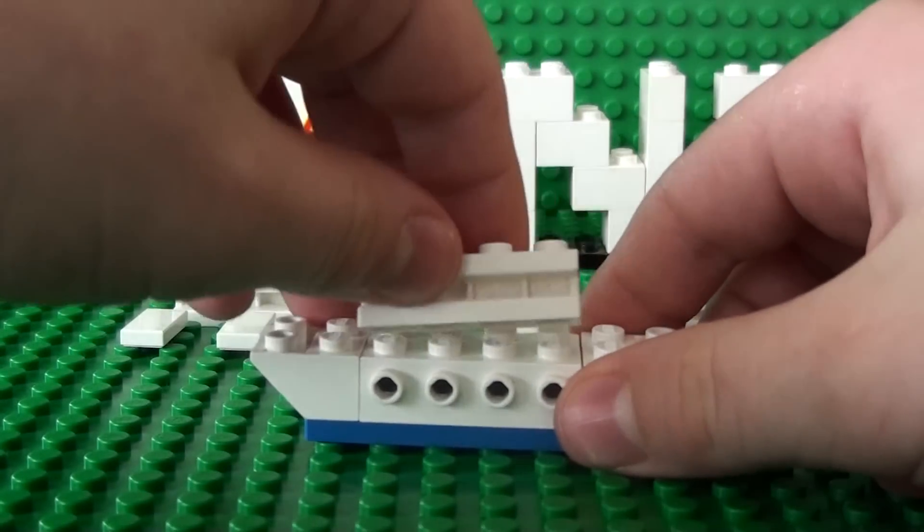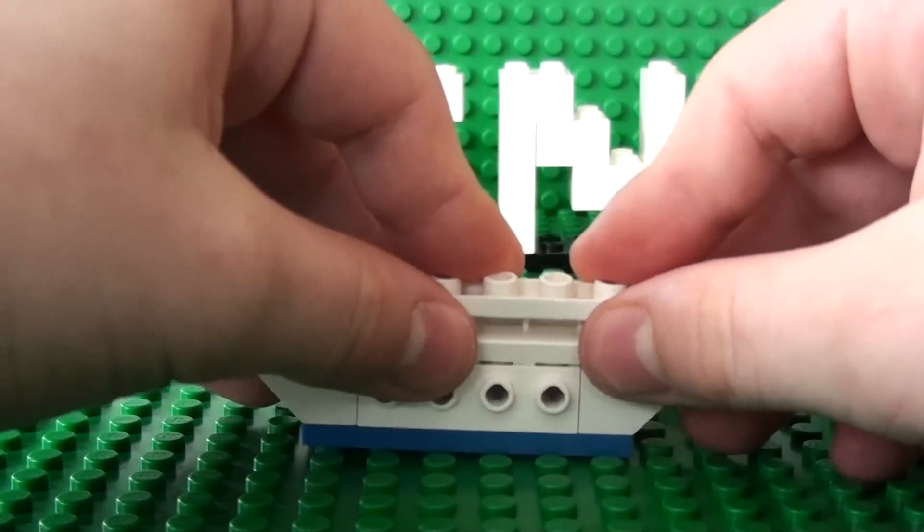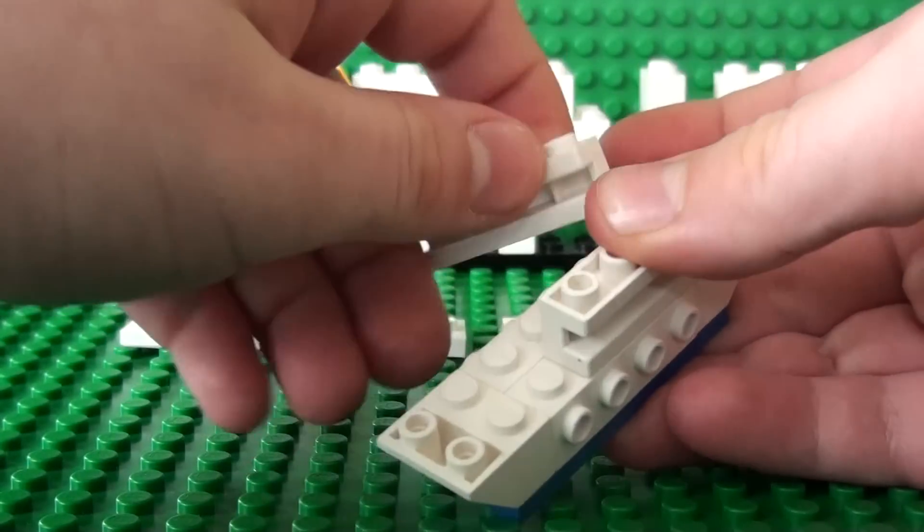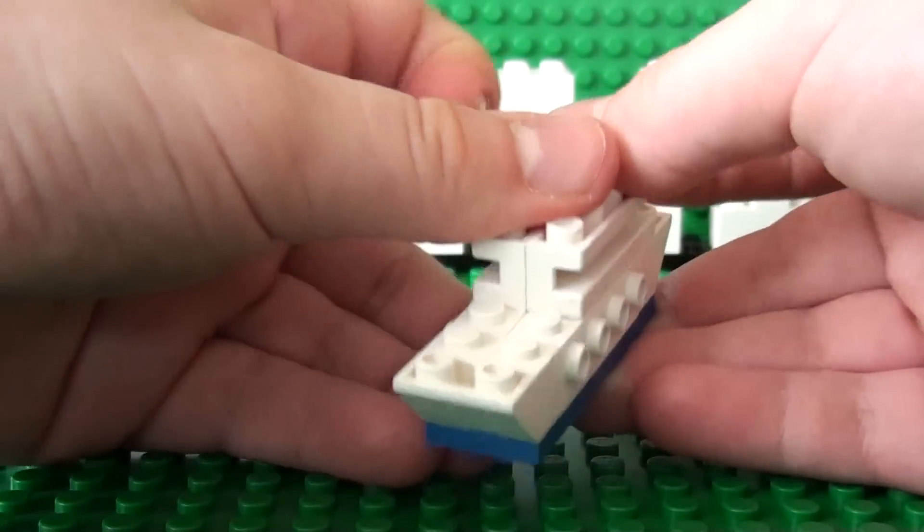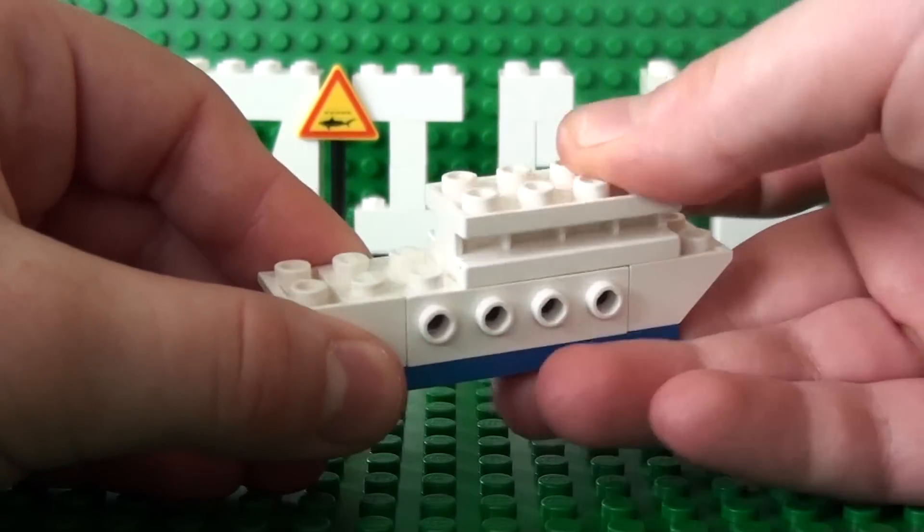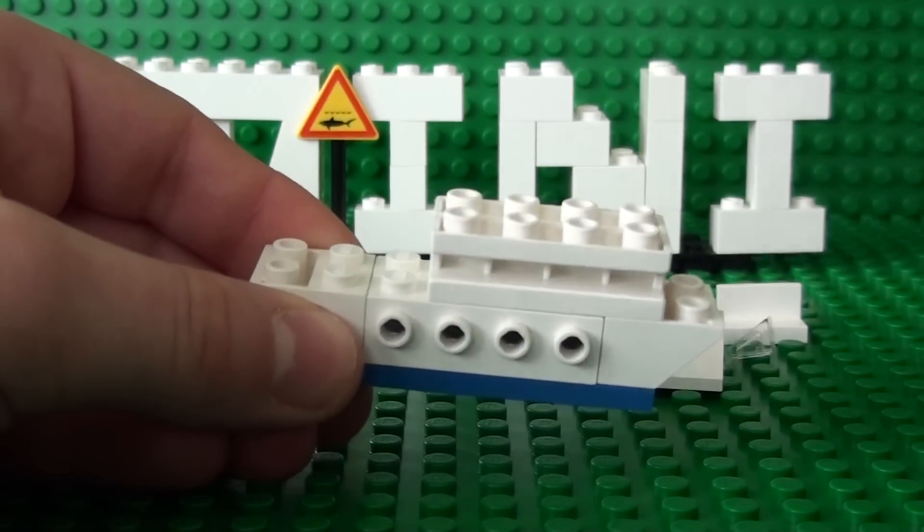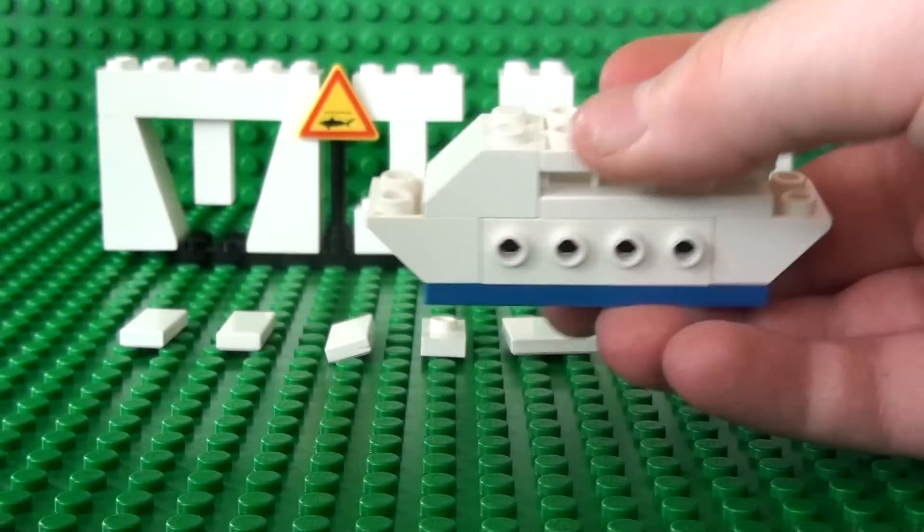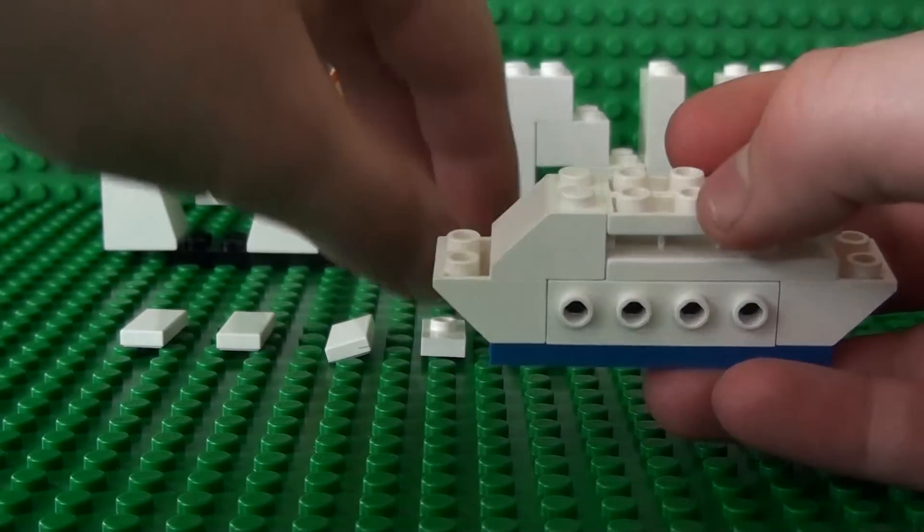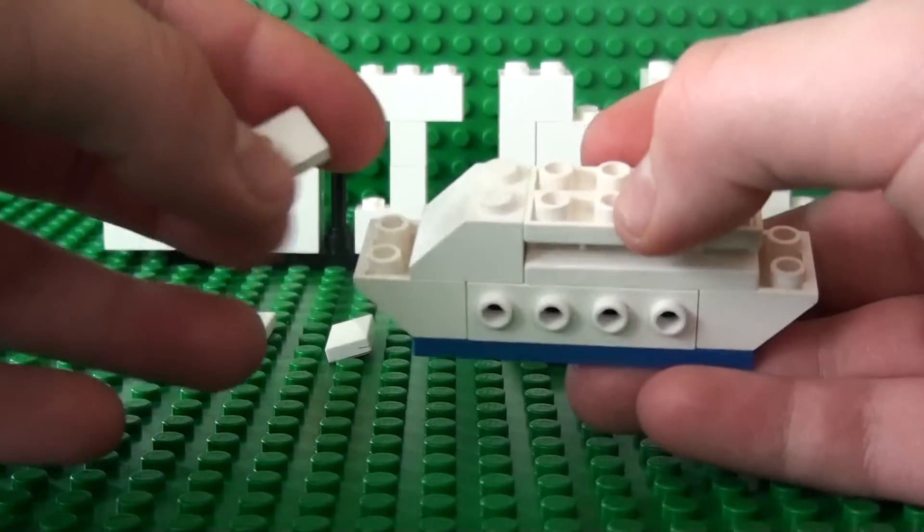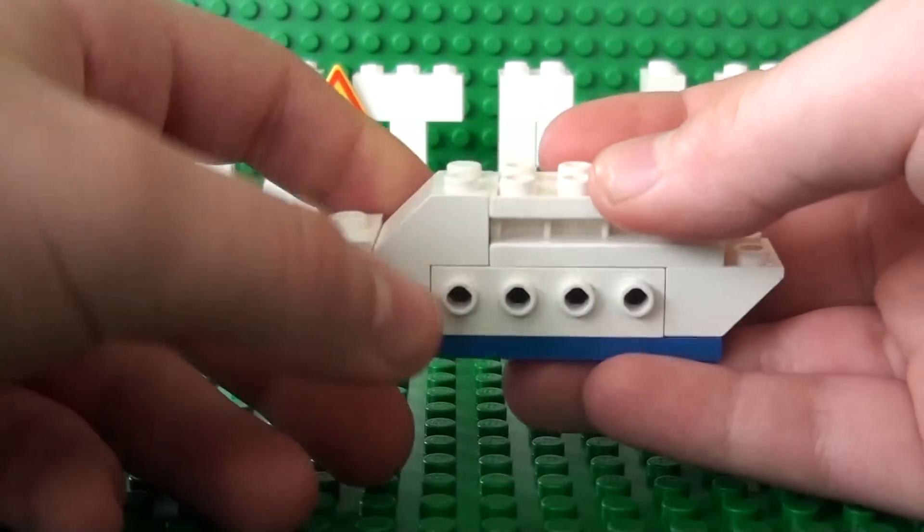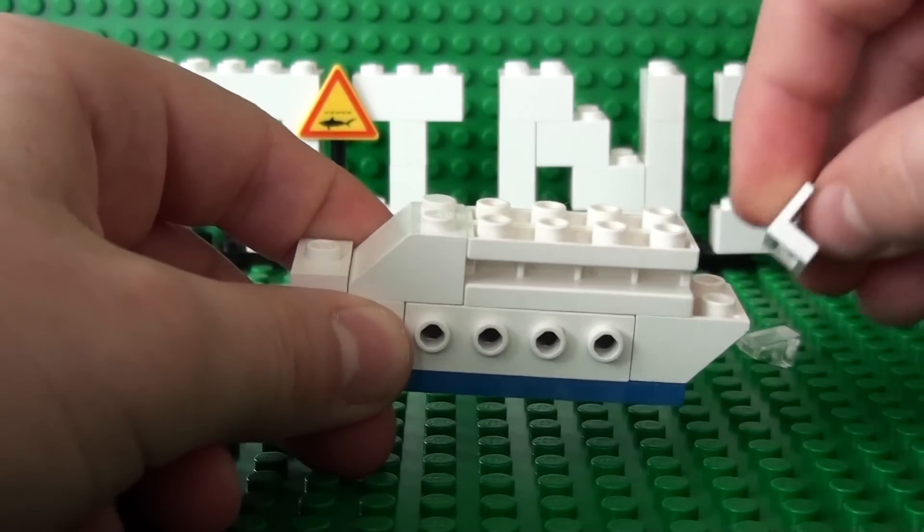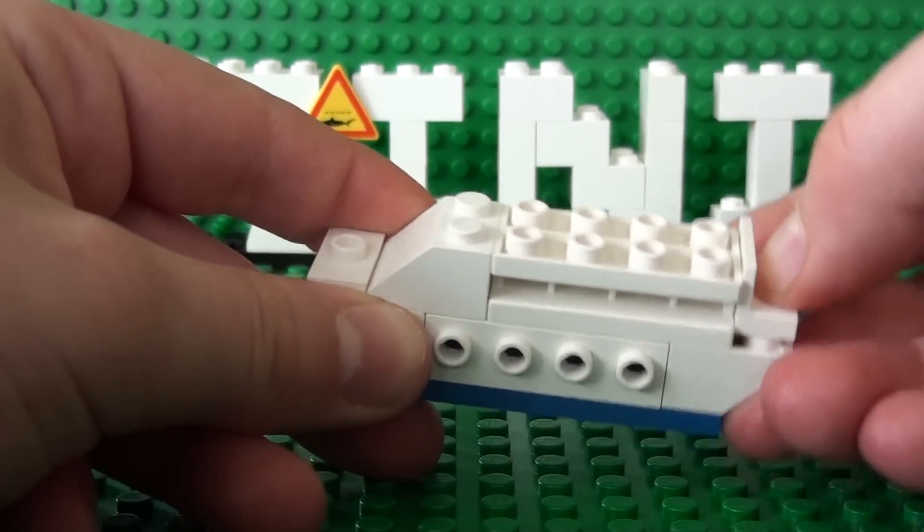Now take both of your 1x4 bricks with cuts and place them here and here. Now you take your 2x2 slope and put it here, and your 2x1 plate smooth with stud and put it here.